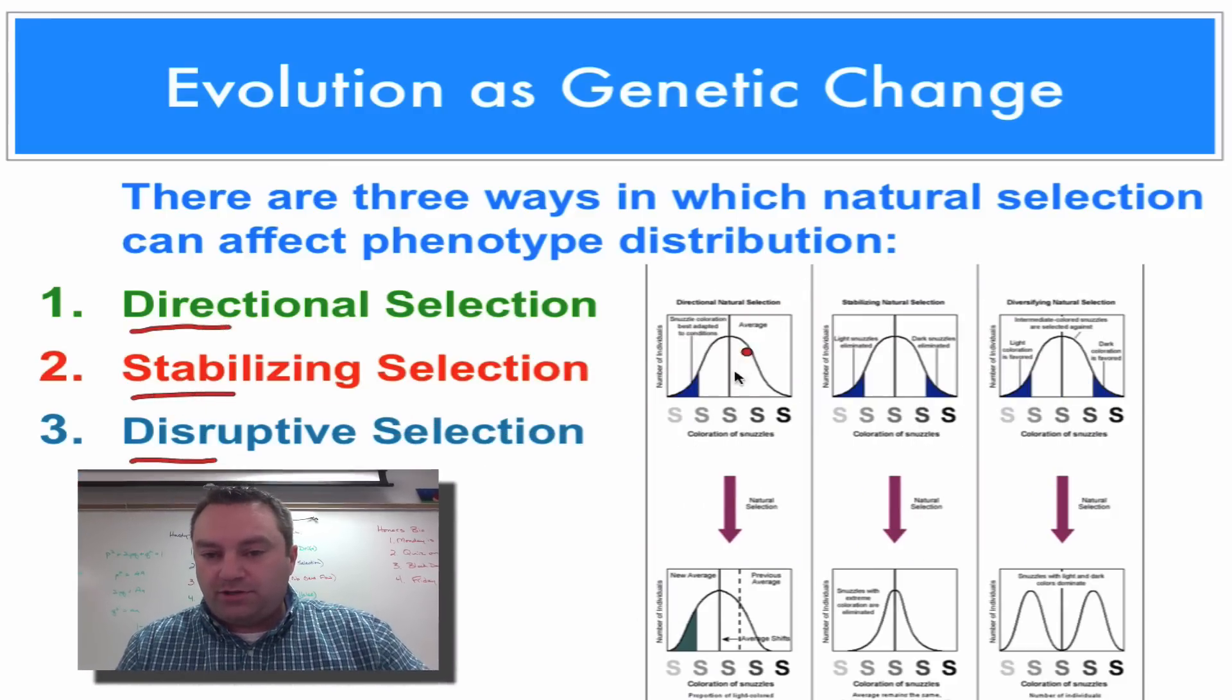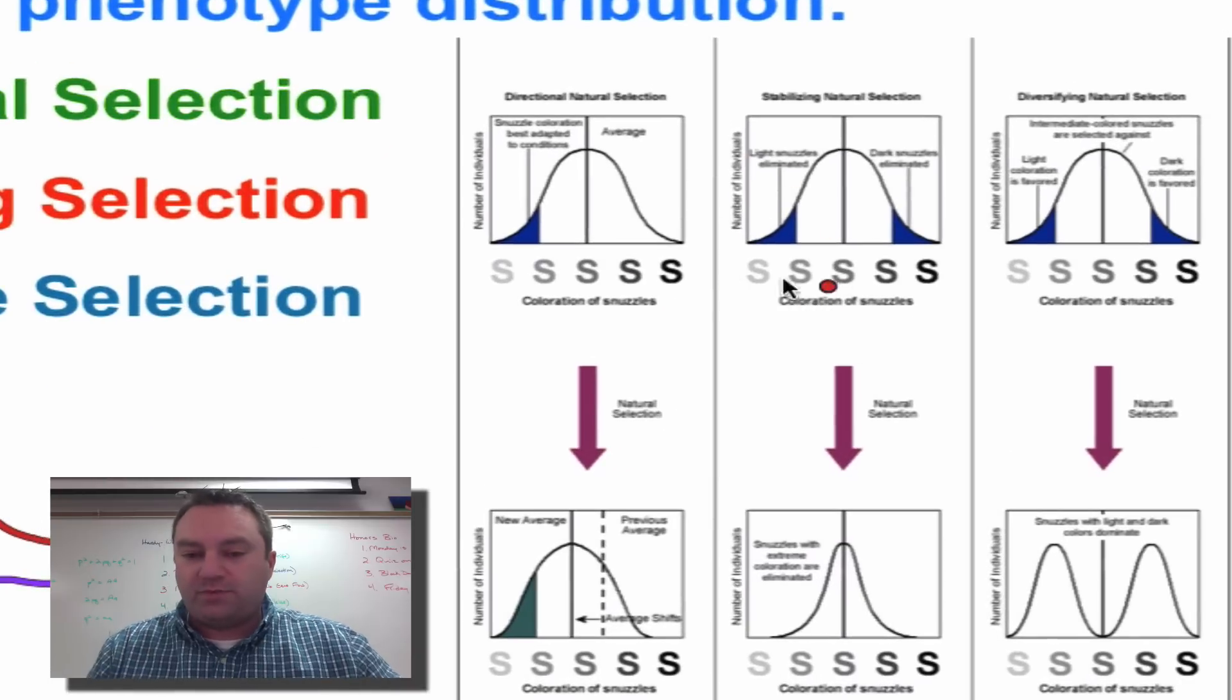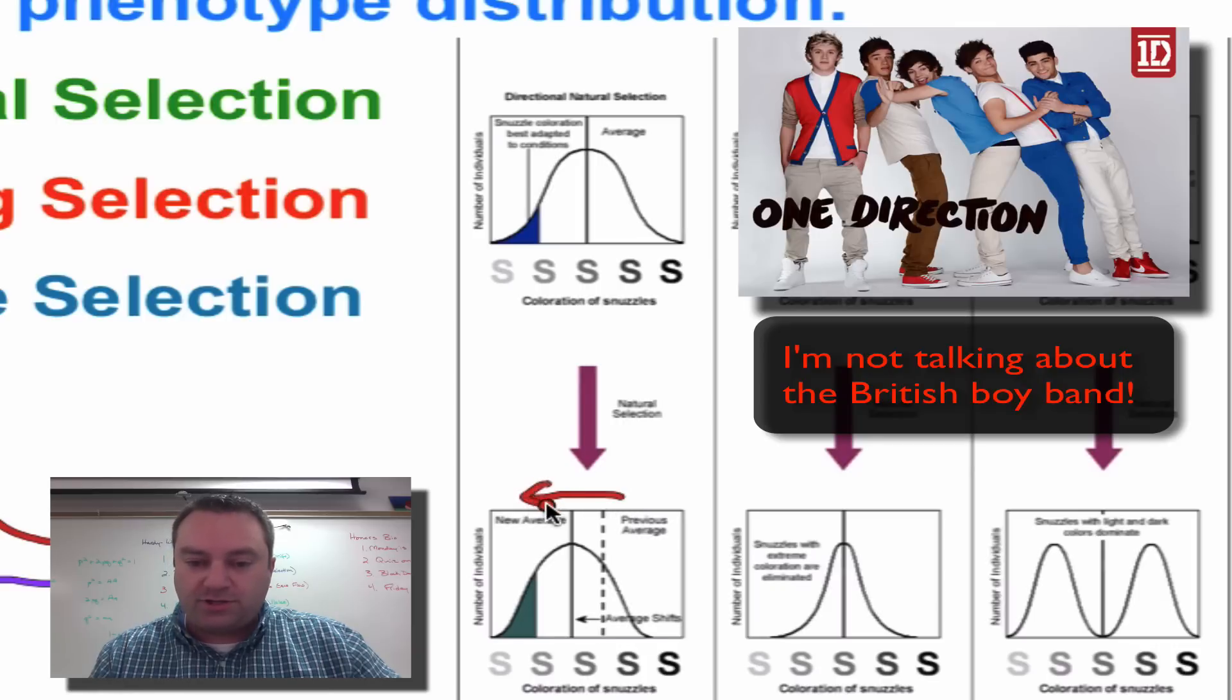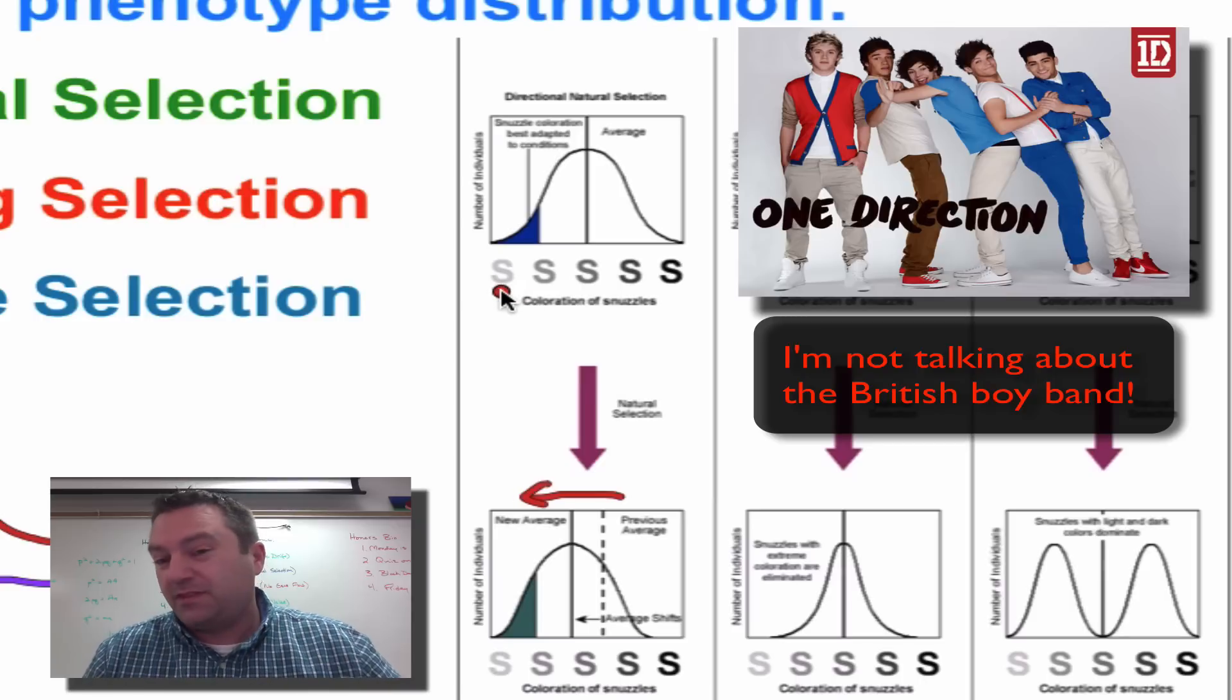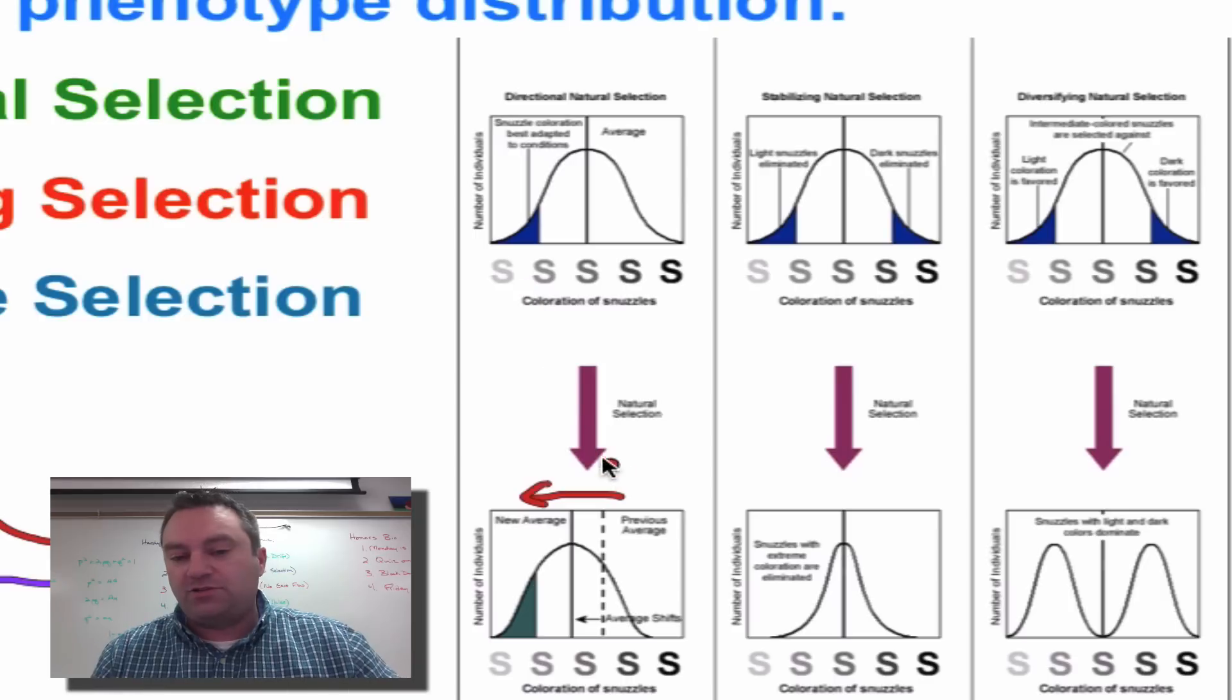I'm going to zoom in over here on this picture. And this one here is directional selection. What happens in directional selection is the curve is going to move in one direction. So this extreme here on the left, which in this case, these are fictional creatures called snuzzles. The lighter colored snuzzles have an advantage. So over time, more and more of the snuzzles are going to be a lighter color.